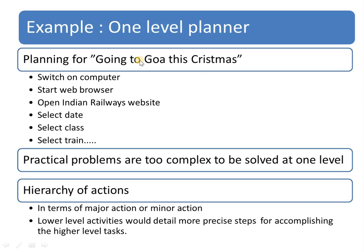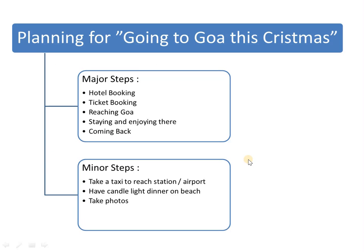So what is the concept of hierarchical planning? Hierarchically, according to priority, I am dividing my list. In a single list — a one-level planner — there are practical difficulties: the list will be too complex and very difficult to solve at a single level. What we have to do is keep a hierarchy of actions, meaning in terms of major actions and minor actions. The major actions give an outline of what is to be done, and the minor actions give a detailed outline. That is the procedure.